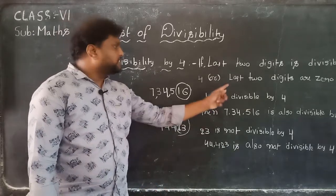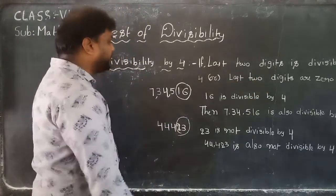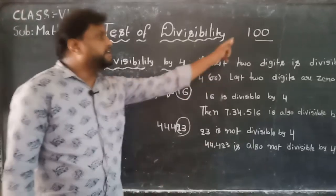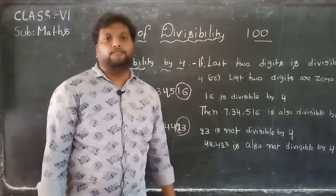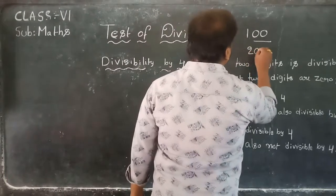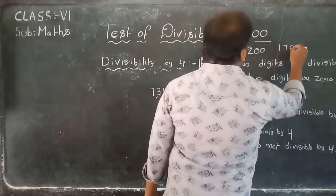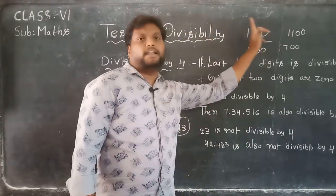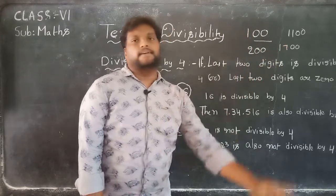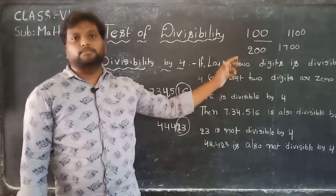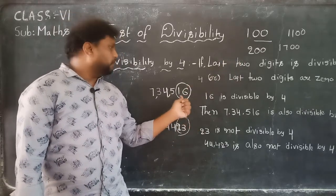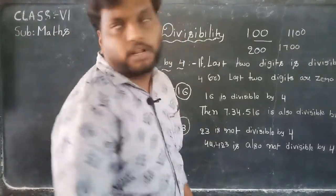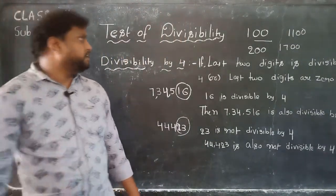One more case: if the last two digits are zeros, for example 100 — the last two digits are 00, so 100 is compulsorily divisible by 4. Similarly 200, 1700, 1100 — whatever it is, if the last two digits are zeros, the number is divisible by 4. This is the rule of 4. Next: rule of 8.